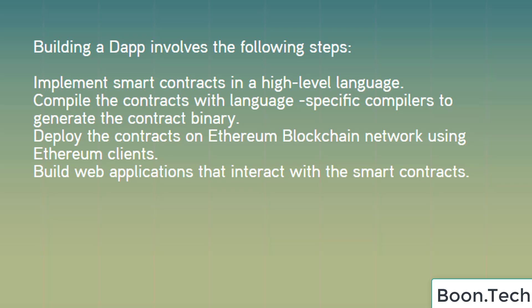Building a DApp involves the following steps: implement smart contracts in a high-level language; compile the contracts with language-specific compilers to generate the contract binary; deploy the contract on the Ethereum blockchain network using Ethereum clients; and build web applications that interact with smart contracts.